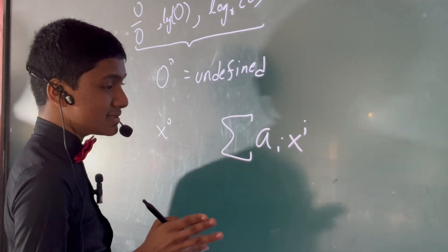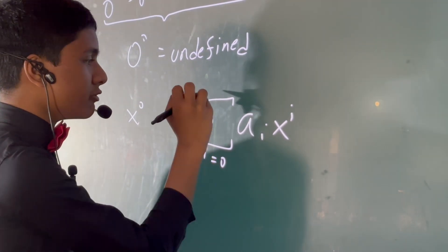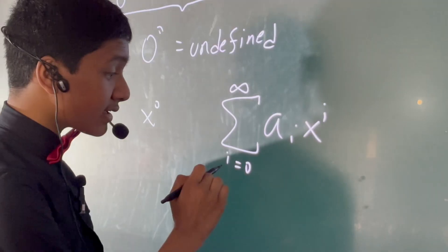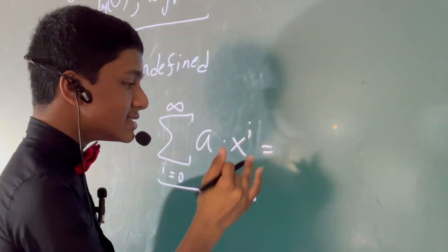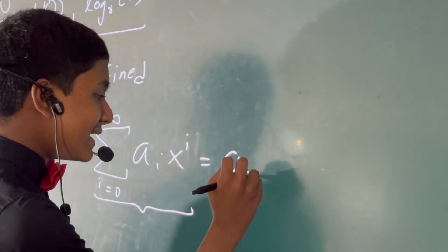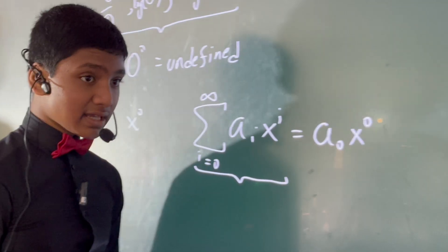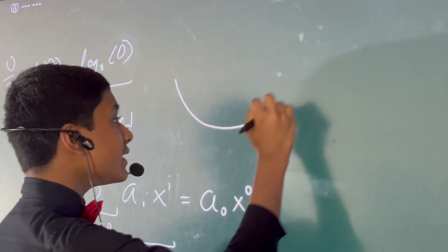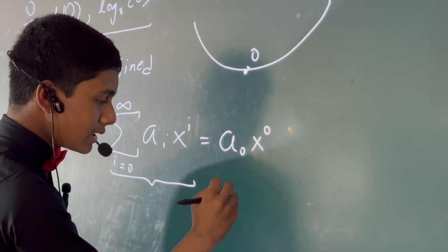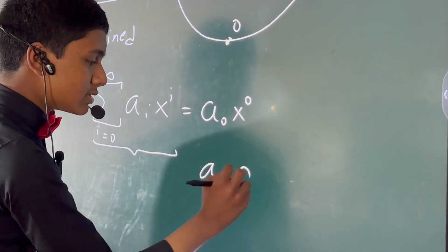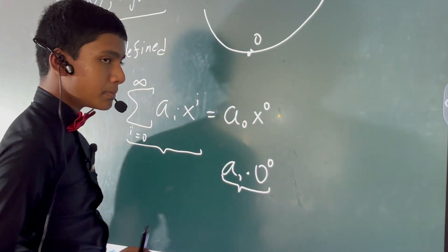Things like these. So you can take from i equals zero to infinity in order to define any function you want that can be written with a power series. The problem is the first term is going to be a zero — x to the zero. But of course, if our function is defined at zero, then this will become a zero times zero to the zero.